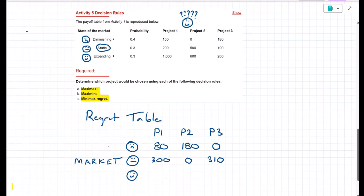If the market turns out to be expanding, well, the best option would be project one earning $1,000. So if we chose project one and the market ended up expanding, that would be the best choice. We'd have no loss. If we chose project two and the market turned out to be expanding, we'd have a regret of $400. We'd say to ourselves, we missed out on $400 by making the wrong choice. And if we chose project three and the market turned out to be expanding, well, we'd say, oof, we've lost out on $800 from making the wrong decision.